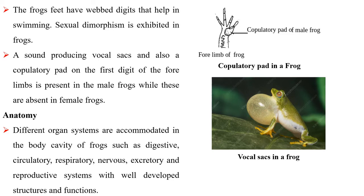Sexual dimorphism is exhibited in frogs. A sound-producing vocal sac and also a copulatory pad on the first digit of the fore limbs is present in the male frog while these are absent in the female frog. Anatomy: Different organ systems are accommodated in the body cavity of frogs, such as digestive, circulatory, respiratory, nervous, excretory and reproductive systems with well-developed structures and functions.